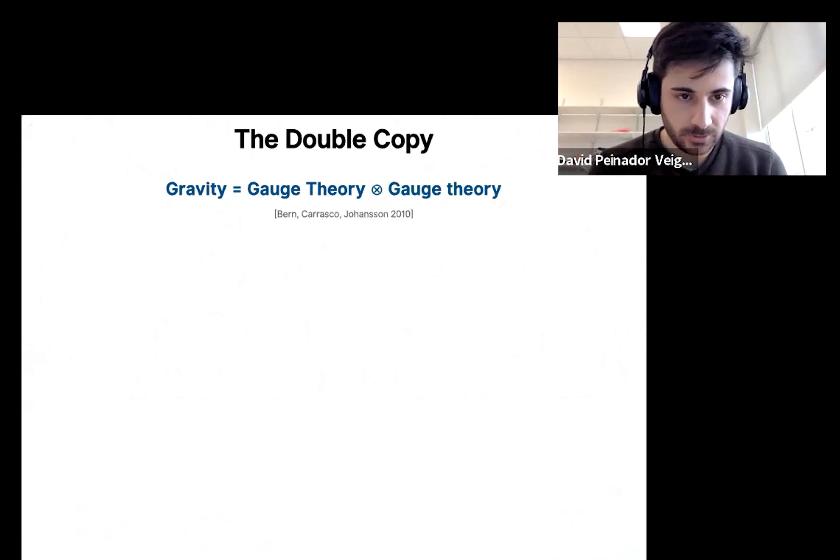So first of all, I need to tell you about the double copy because you might not be familiar with this. It was a duality that appeared in the context of scattering amplitudes in 2010. And the main idea is to recast gravity as the tensor product of two gauge theories.